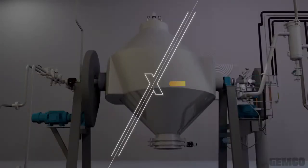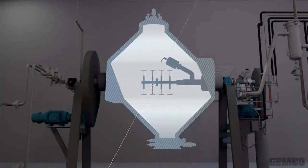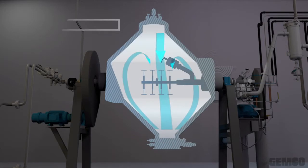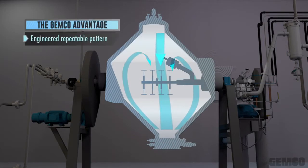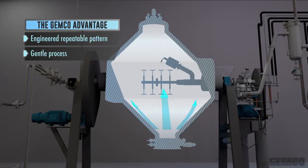The blender moves at a precise speed so that the material will climb the wall and cascade over itself. There is no additional force from paddles, plows, or spiral ribbons other than gravity. This allows for a gentle repeatable pattern that not only maintains a superior blending design but also preserves the product's physical characteristics.